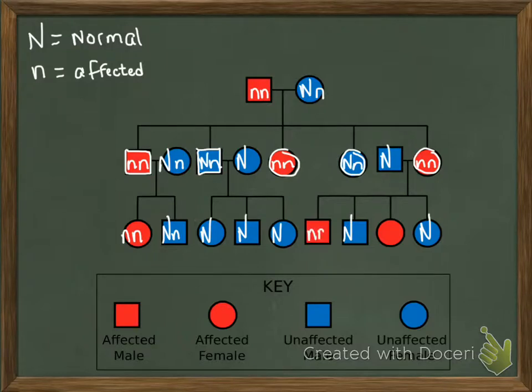These offspring are affected, so they're carrying two little n's. One of those is from dad, which means the other one has to be from mom. You see, we were able to make that whole pedigree work out, which means that this has to be a possible mode of inheritance. So we've checked off that this trait could, in fact, be inherited in an autosomal recessive manner.